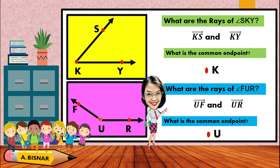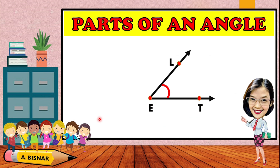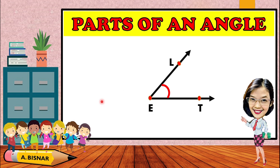Let us study the parts of an angle. From this illustration, the first part is the vertex. The vertex is point E, which is also known as the common endpoint. The common endpoint will always be the vertex. The sides of the angle are also the rays of the angle — we have ray EL and ray EE as the two sides.